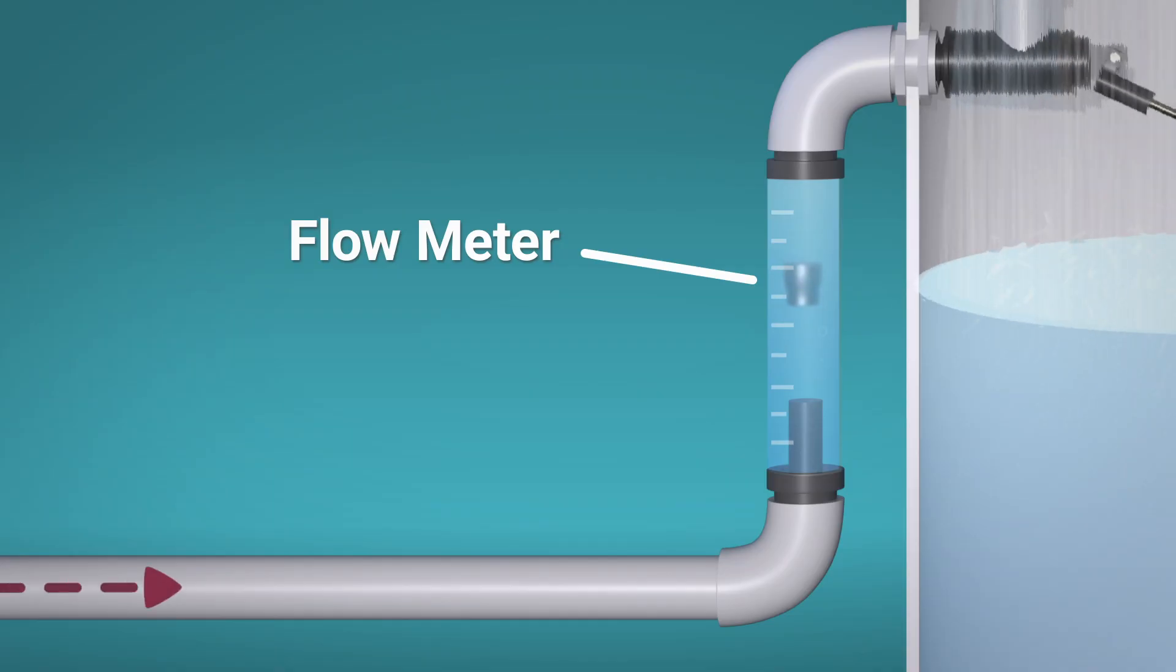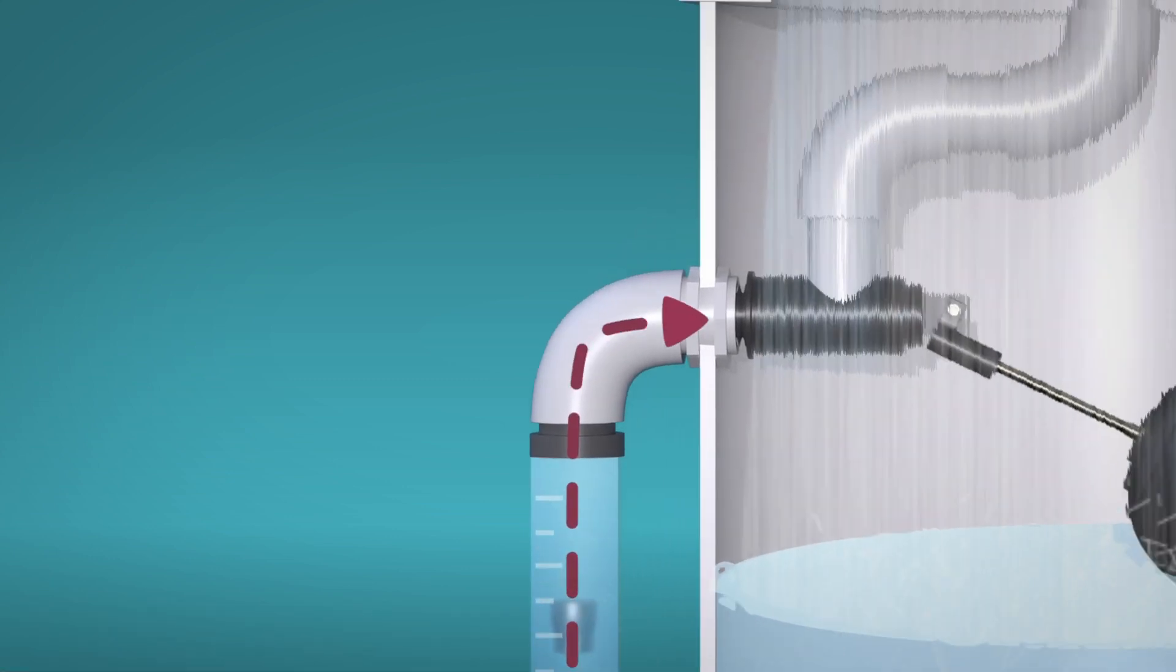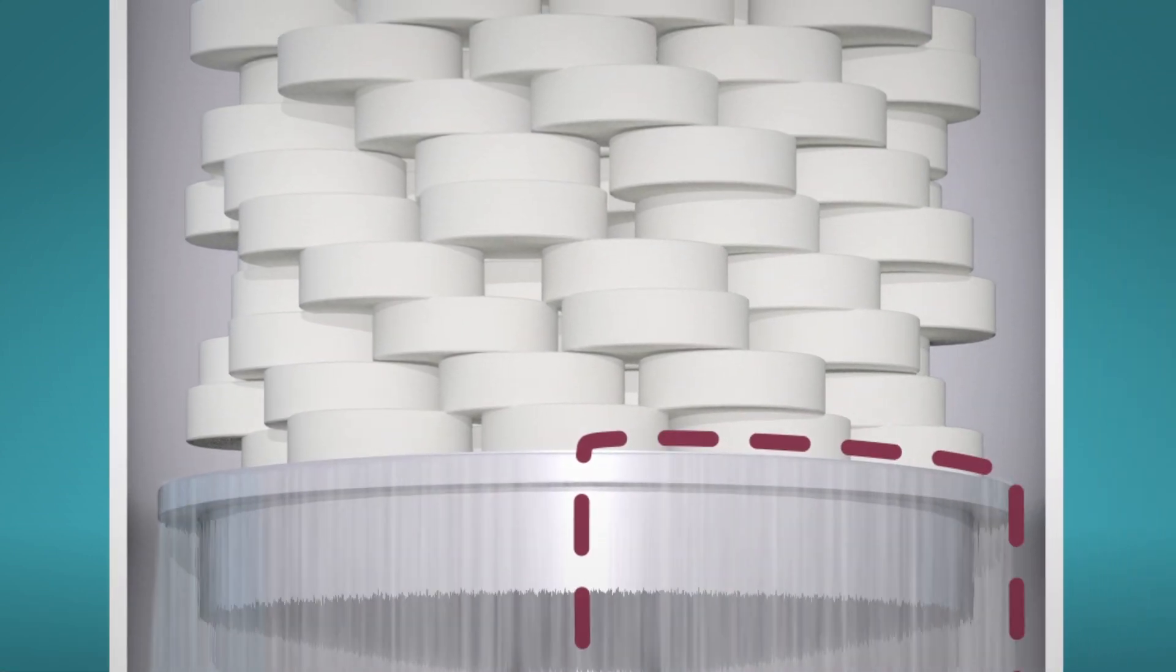Before touching the tablets, water goes through the flow meter, which tracks the rate the water flows into the system. It continues through to the sieve plate, where it touches the bottom of the tablets.